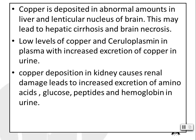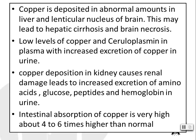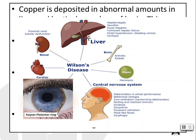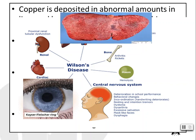With increased excretion of copper in urine, copper deposition in the kidney causes renal damage, leading to increased excretion of amino acids, glucose, peptides, and hemoglobin in urine. Intestinal absorption of copper in this disease is very high — about 4 to 6 times higher than normal. The kidney is affected, heart is also affected, bone undergoes arthritis and rickets, and liver undergoes cirrhosis. Deposition of copper in the eye causes Kayser-Fleischer rings, as can be seen in the picture. This other picture shows liver cirrhosis.